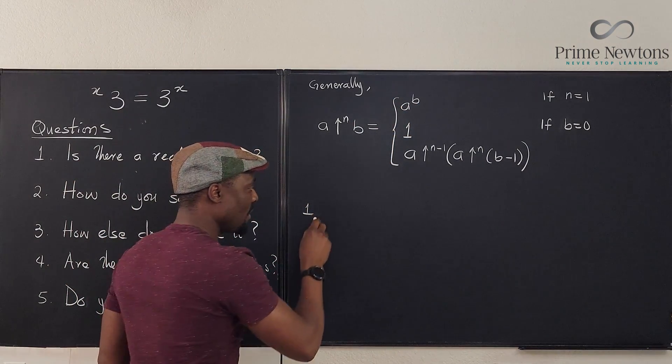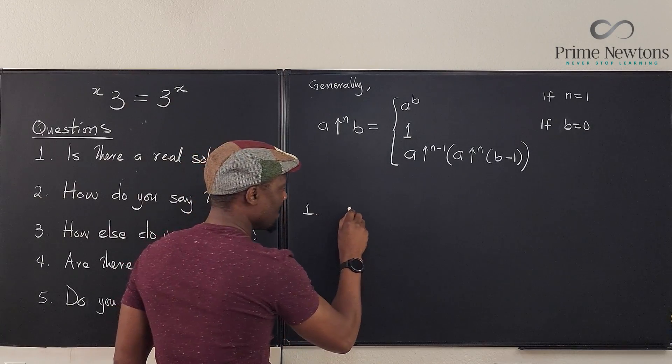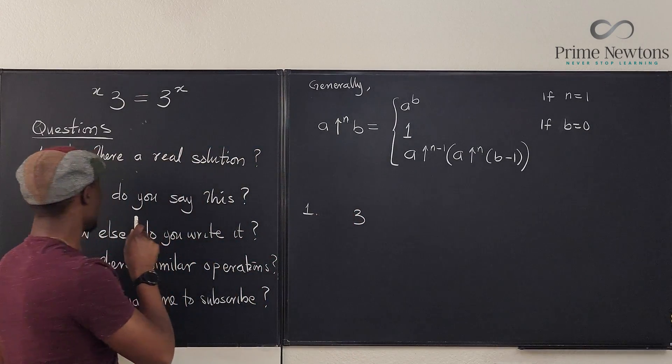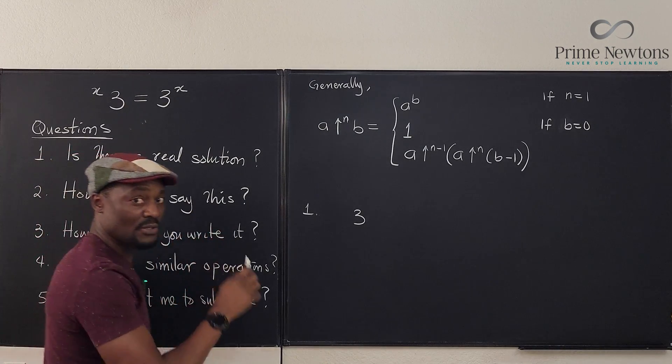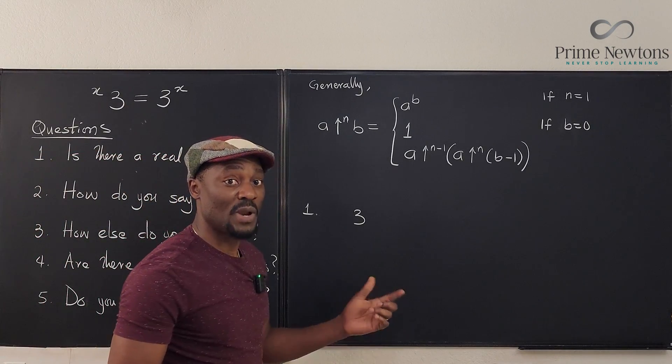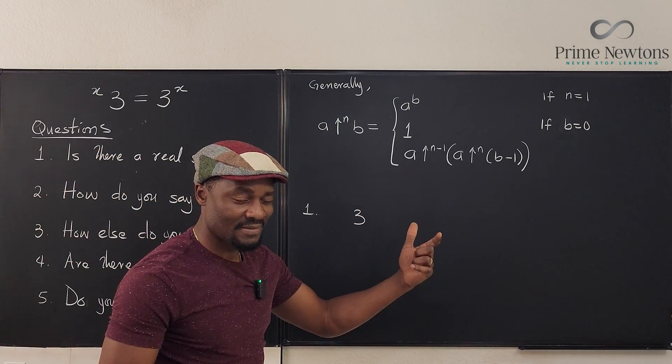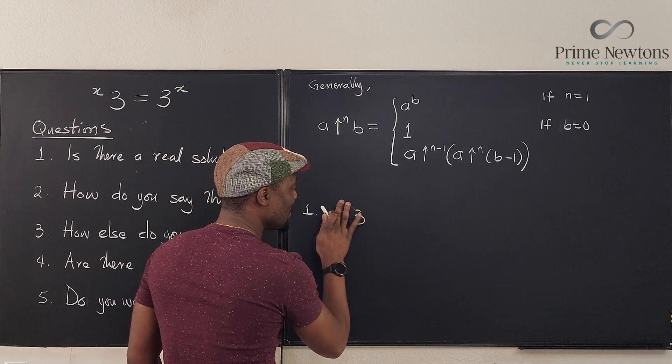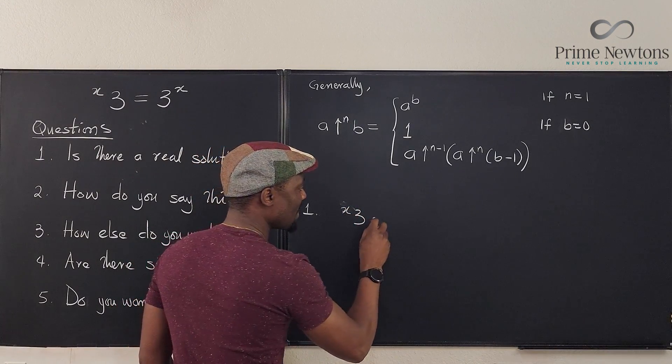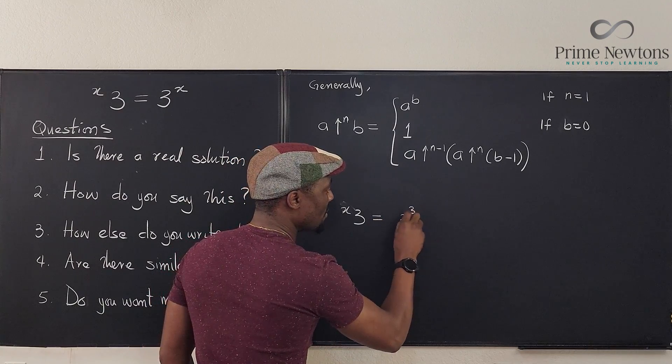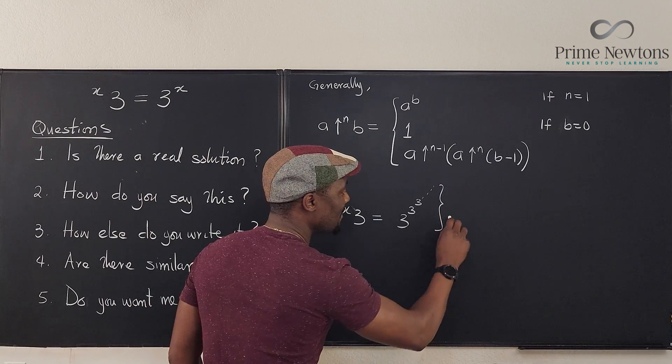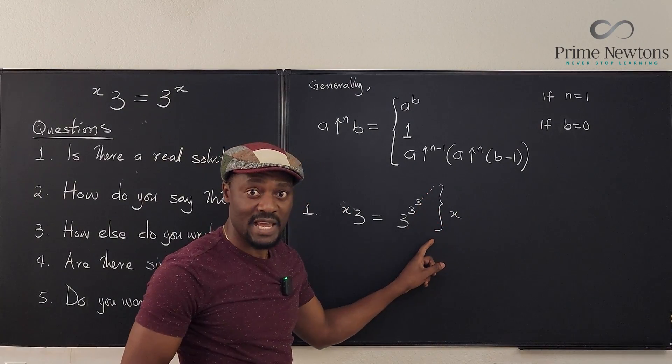So for number one, what we have is we have three to the superpower X. I'm just answering this question by saying superpower. So that's another way you say tetration: superpower. I like that. So we got three to the superpower X is the same thing as three raised to power three raised to power three, and it keeps on going and the height of it is X. But we don't know what that is.